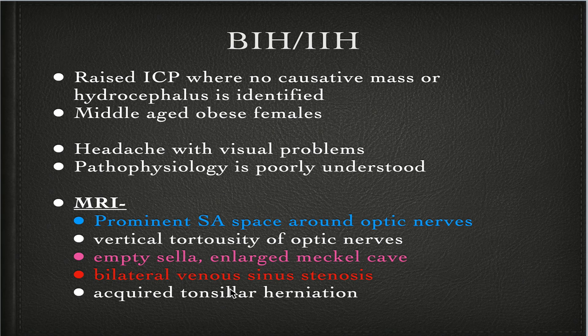Coming to MR imaging findings: prominent subarachnoid space around the optic nerves, vertical tortuosity of the optic nerves, empty sella, enlarged Meckel's cave, and bilateral venous sinus stenosis — which is a very important finding. Always advise MR venogram to look for this finding if you have a clinical suspicion of benign intracranial hypertension. In severe cases you can also see acquired tonsillar herniation. Thank you all.